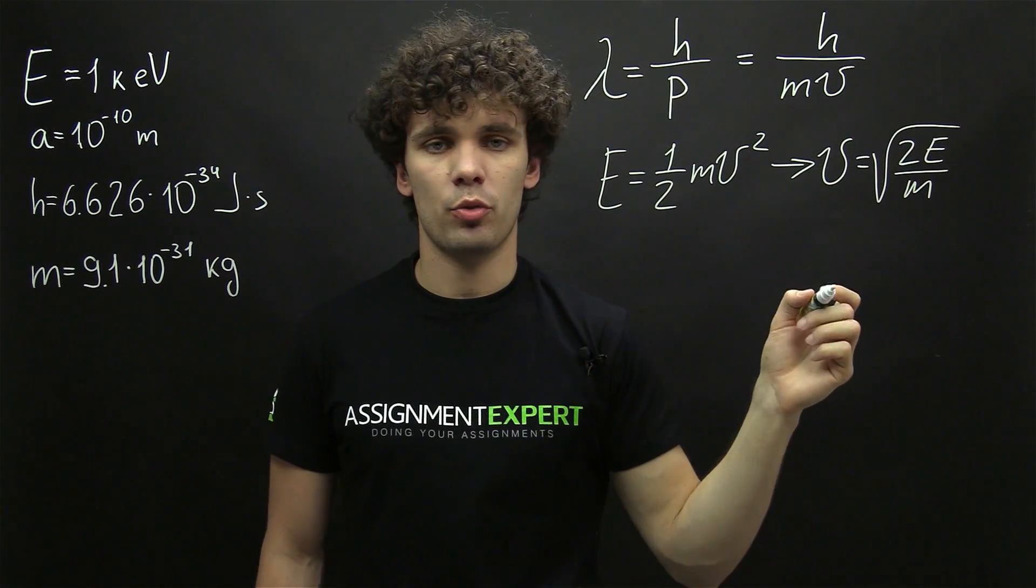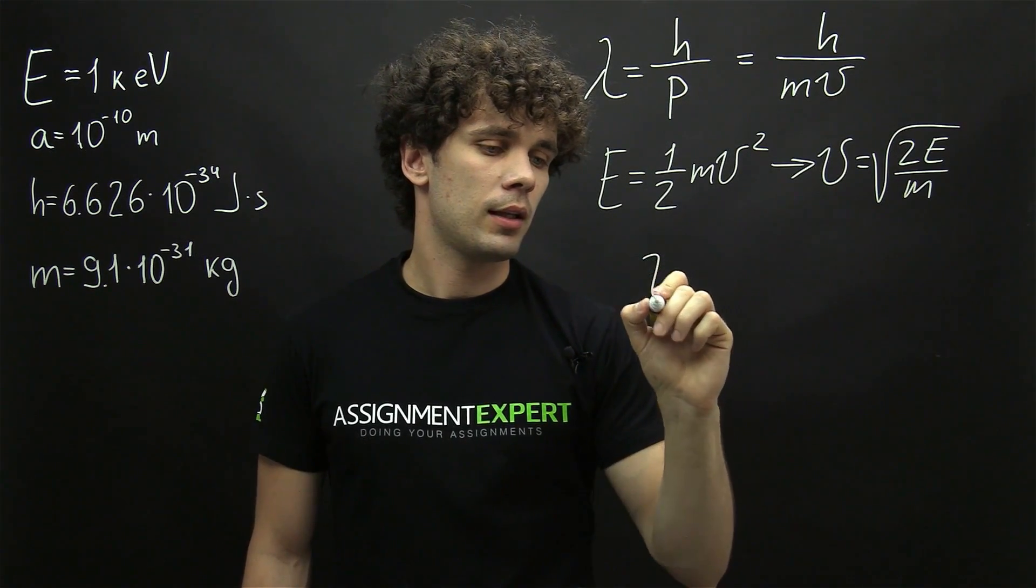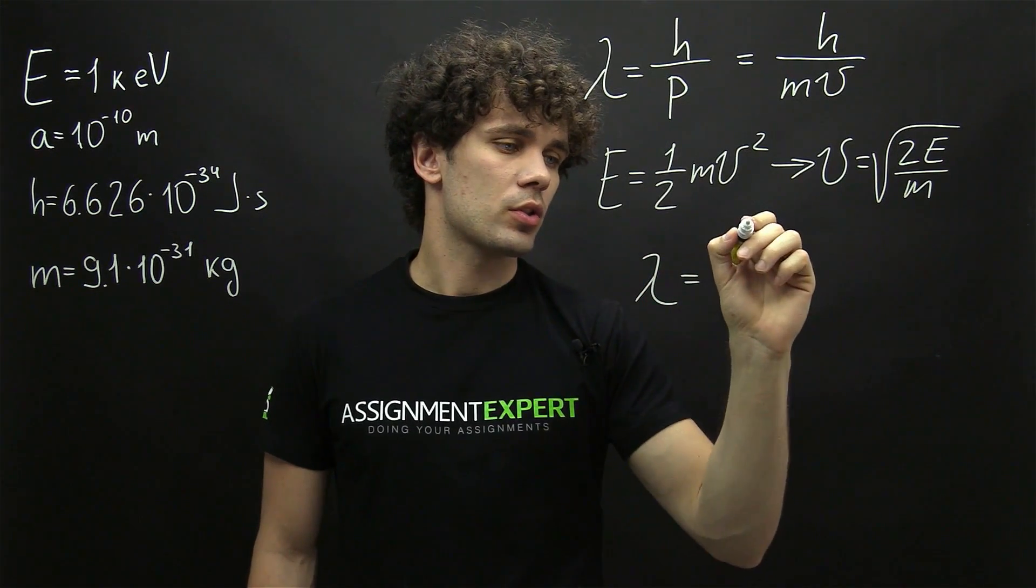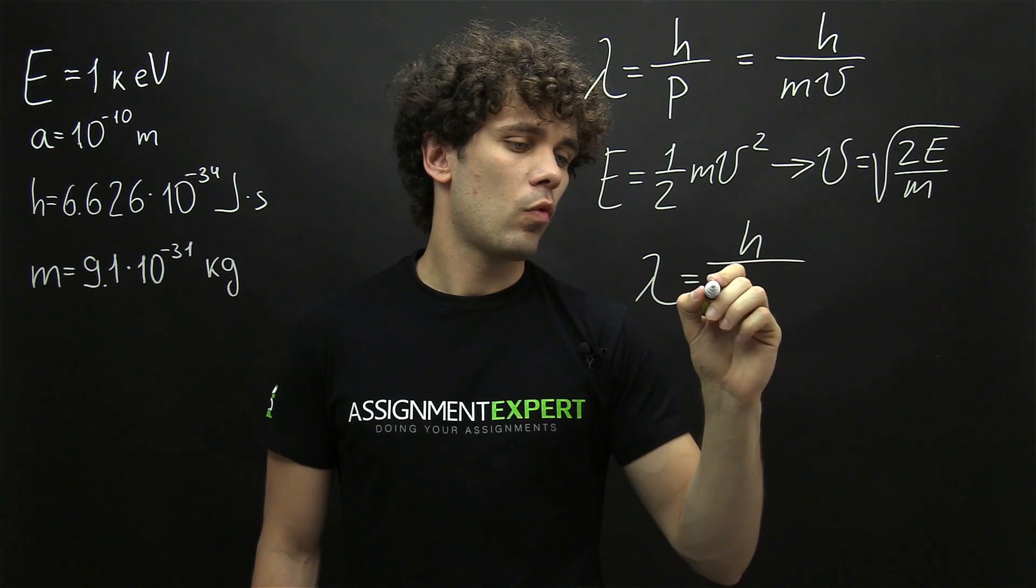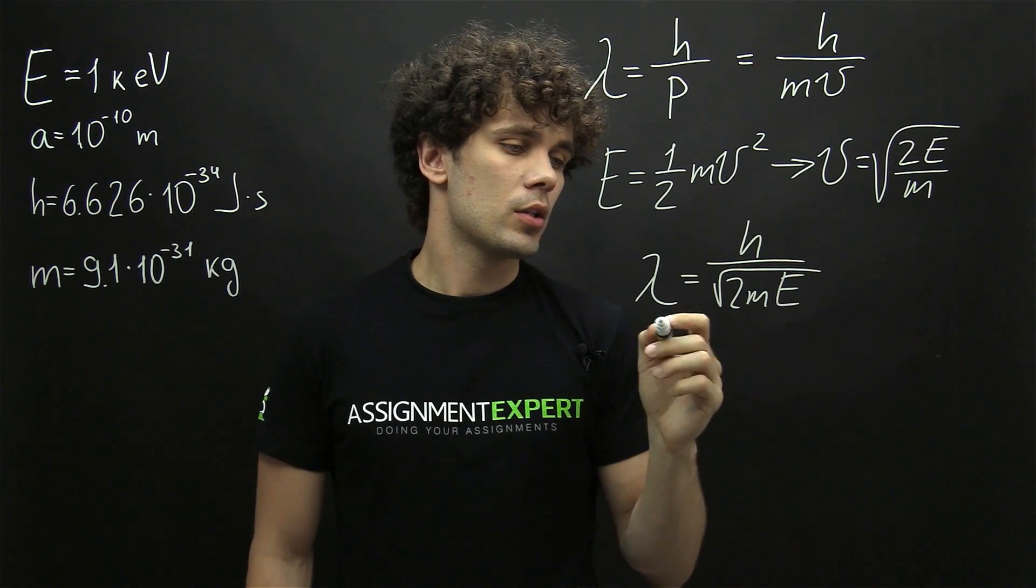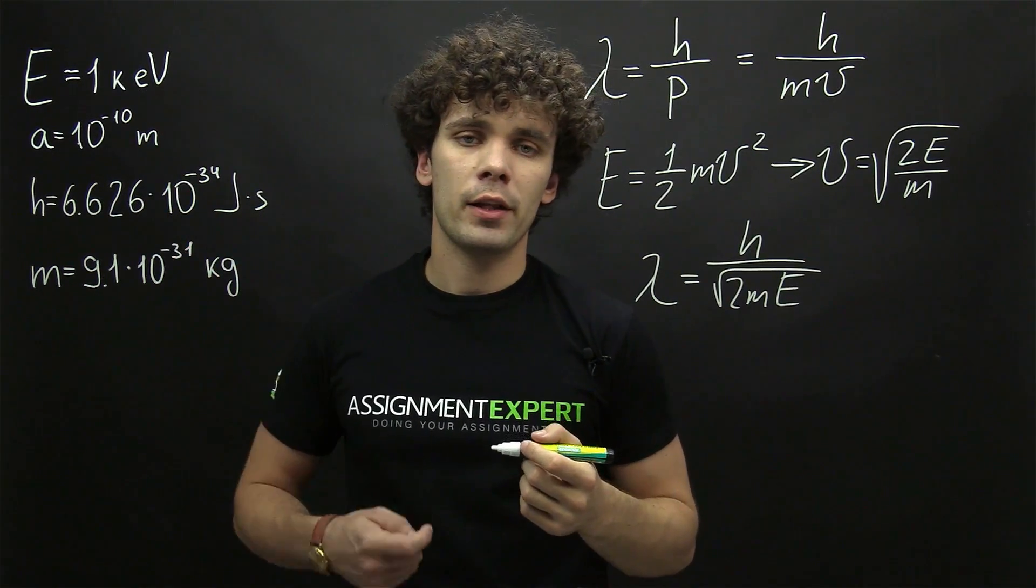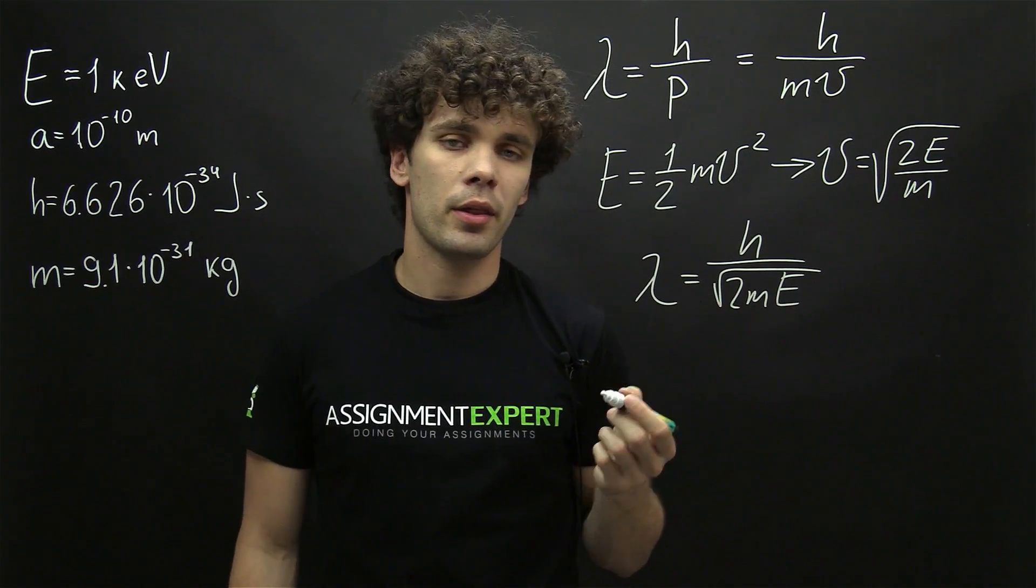Now let's take this expression and put it into our formula for the wavelength. Lambda equals h over the square root of 2mE. So here we have the formula for the wavelength. And we know all the values to find it. So let's calculate the wavelength.